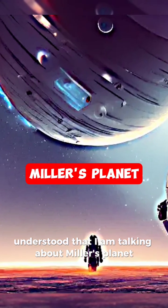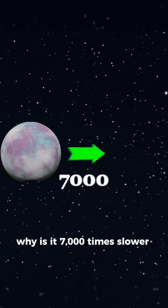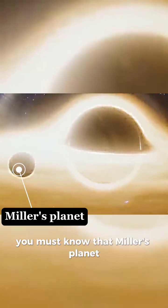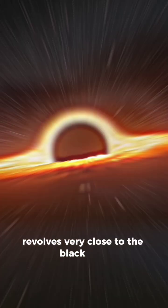am talking about Miller's planet. But after all, why is time on this planet 7,000 times slower than Earth? Before that, you must know that Miller's planet revolves very close to the black hole and orbits